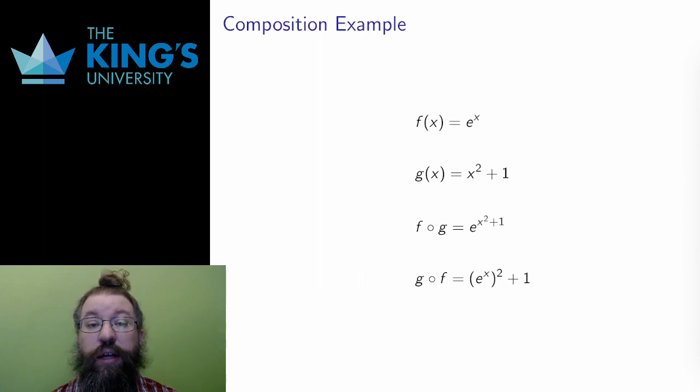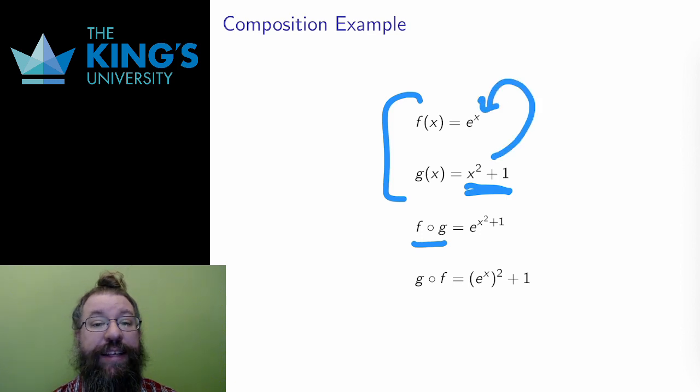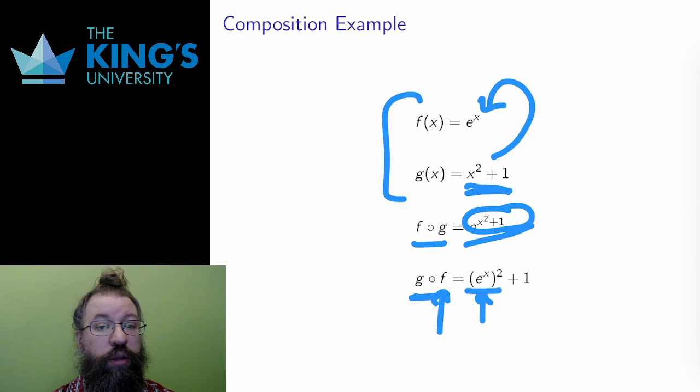Here are some examples. I'll take two functions, an exponential and a quadratic. In the composition of f with g, g is the inside function, so the quadratic happens first. Then I put the output, the x² plus 1, as an input into the outside function, the exponential. This means that the variable x in e to the x is replaced with x² plus 1, the whole output of the first function. The result is e to the x² plus 1, where the whole expression x² plus 1 is in the exponent. I can also compose the other way around. In g compose f, f is the inside function, so I do the exponential first. Then g says to square and add 1, so I take the output of the exponential, square it, and add 1 to produce the composition.